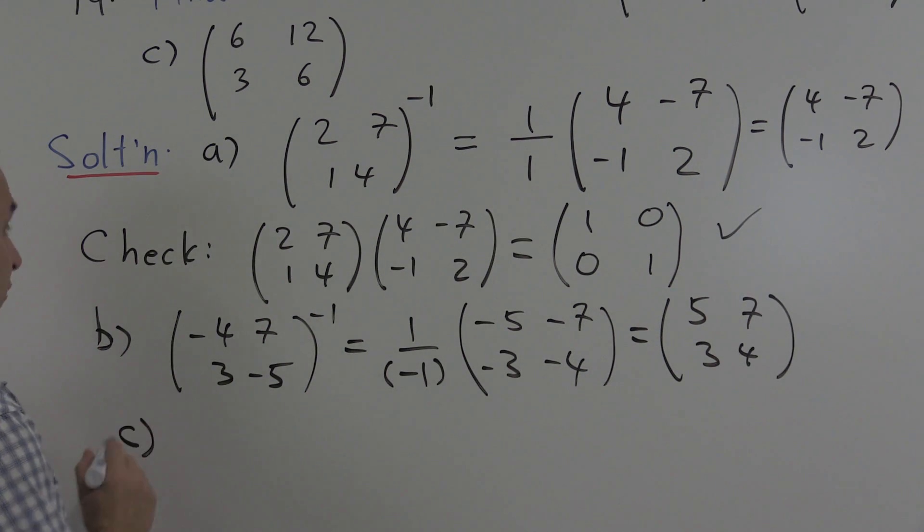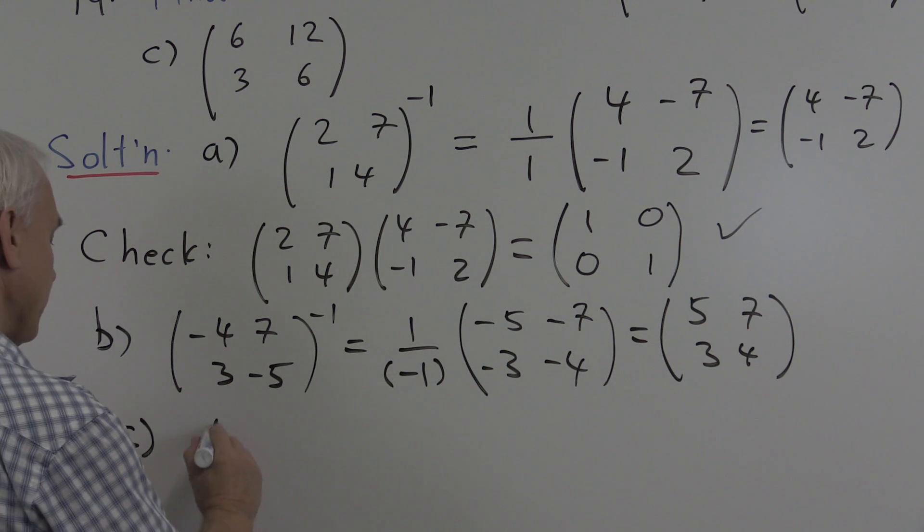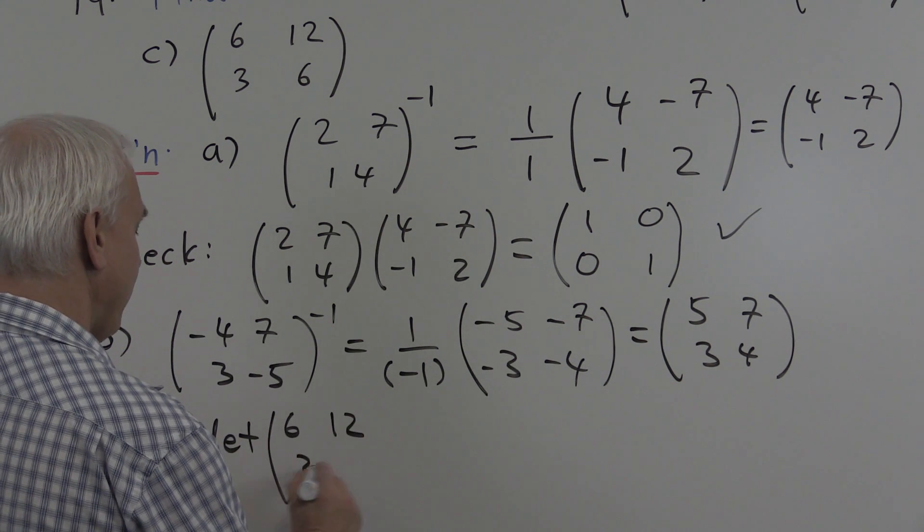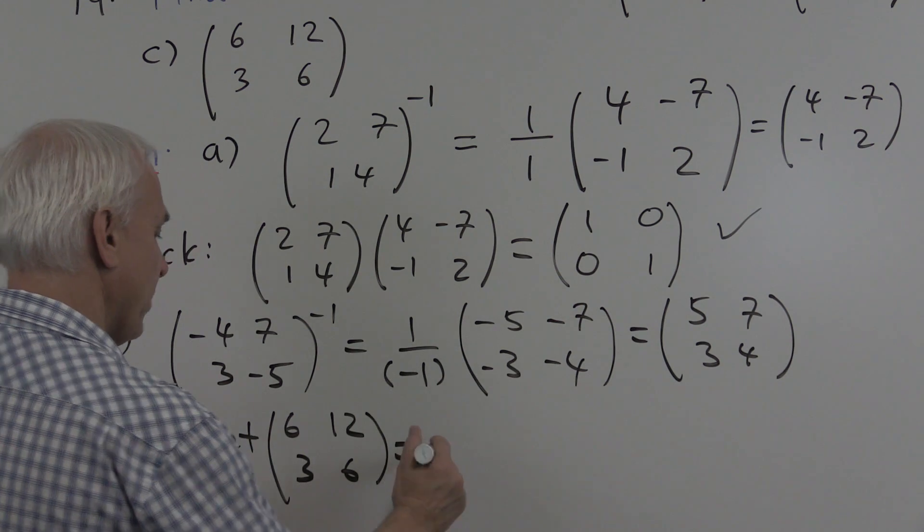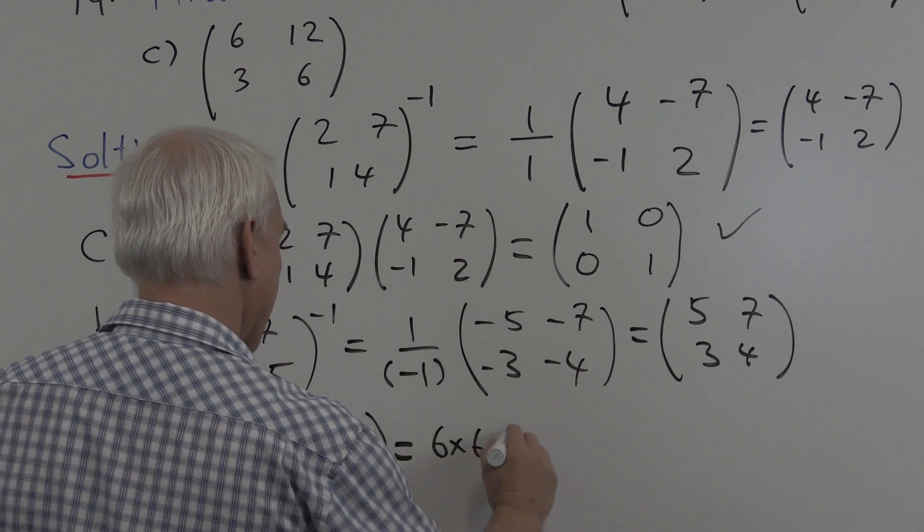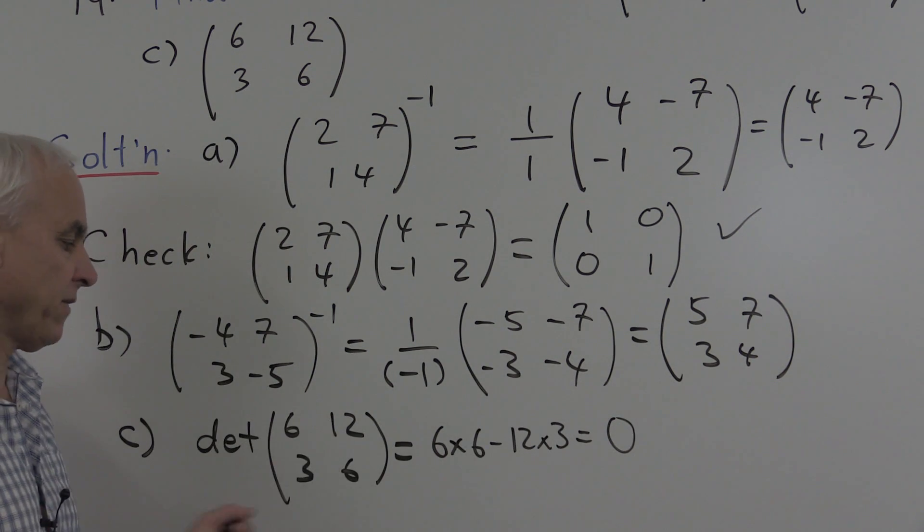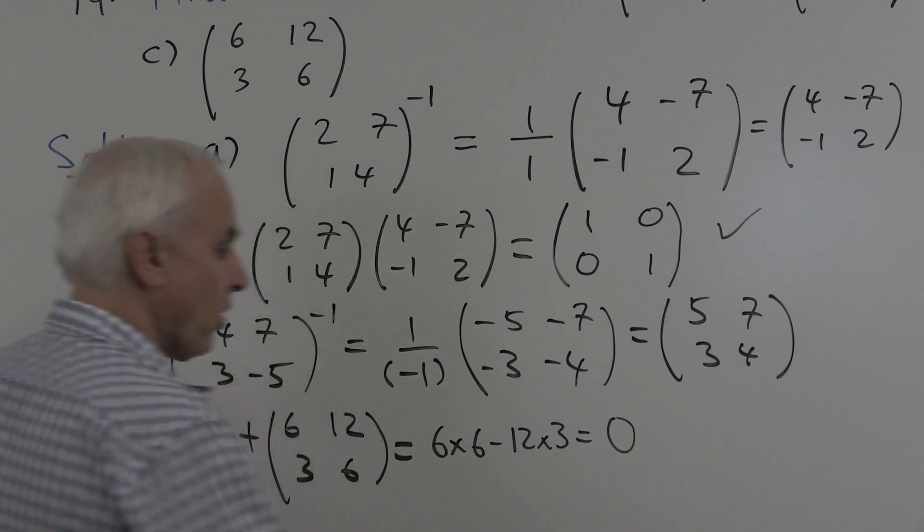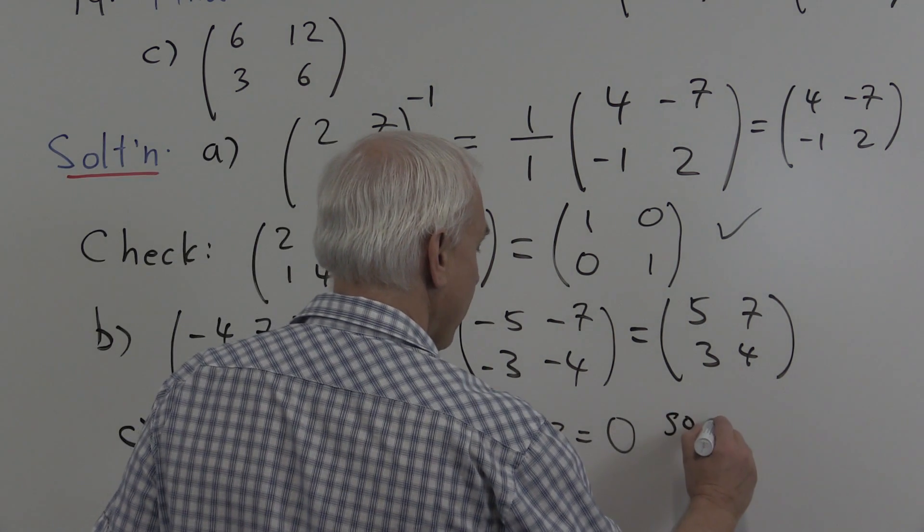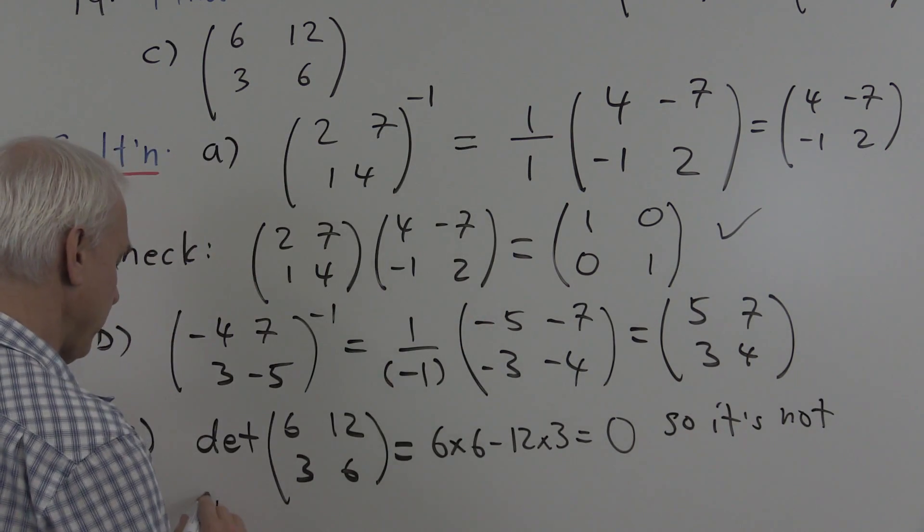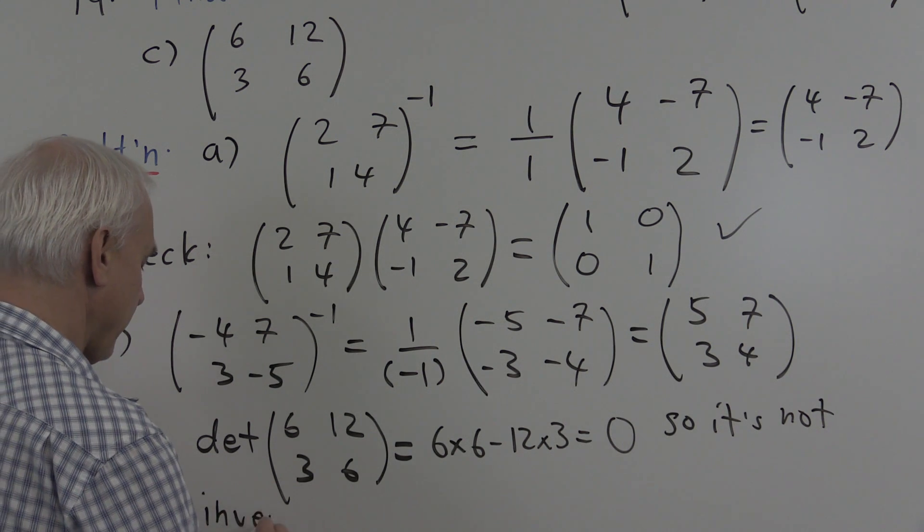And finally, let's have a look at this matrix six, twelve, three, six. So here, the problem is that this matrix has determinant which is six times six minus 12 times three is zero. So it's not invertible.